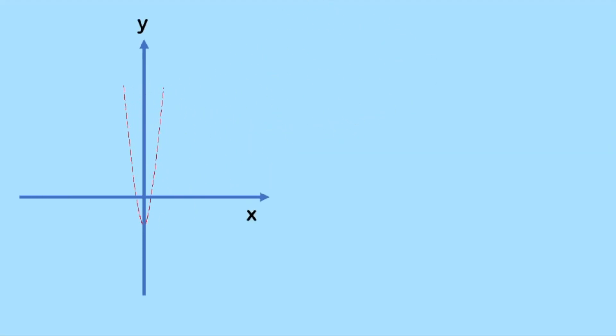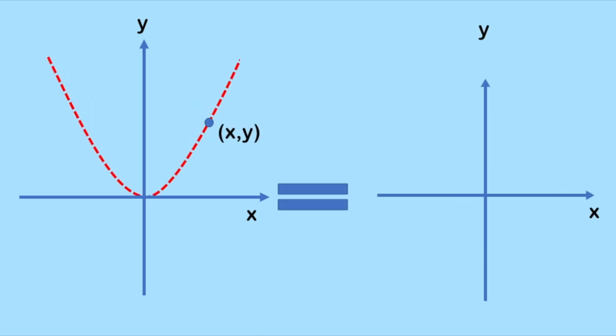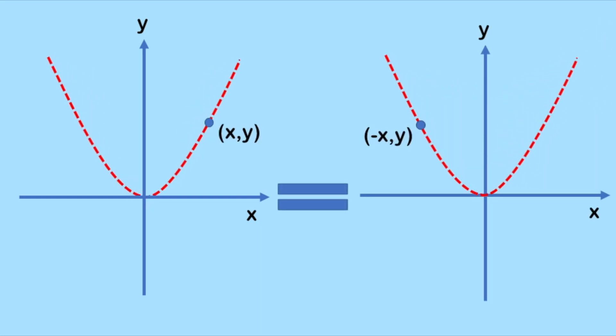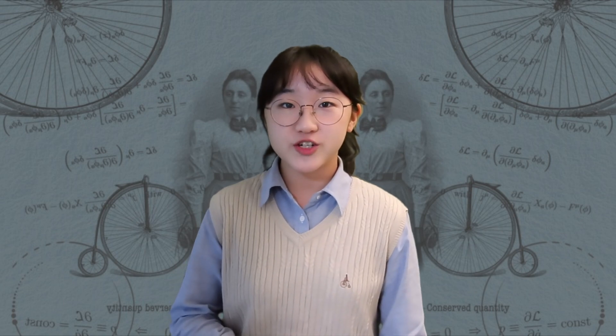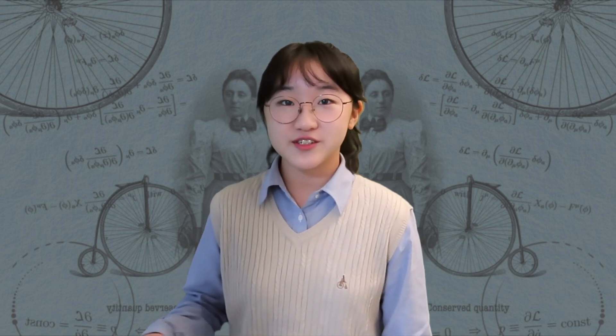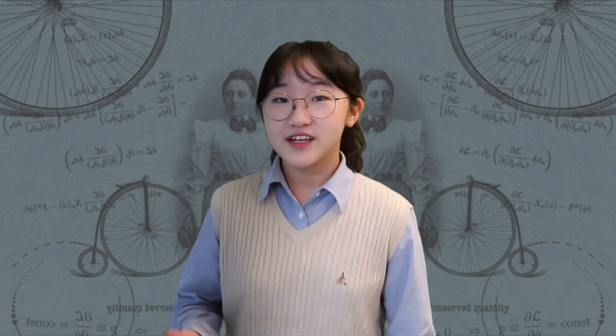To put it graphically, even if you flip the equation about the y-axis, the graph looks the same. So we can say that the equation y equals x squared is symmetric under flipping left and right.